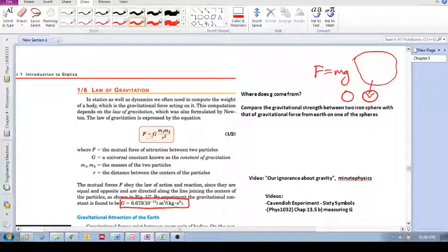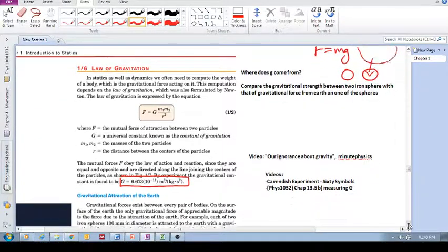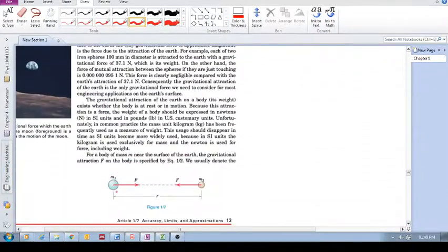So this is a universal constant, and they needed to measure it somehow, and this explains how they measured this value of G. And then of course we have R squared, which is just the distance. R is just the distance between these two masses, these two bodies.